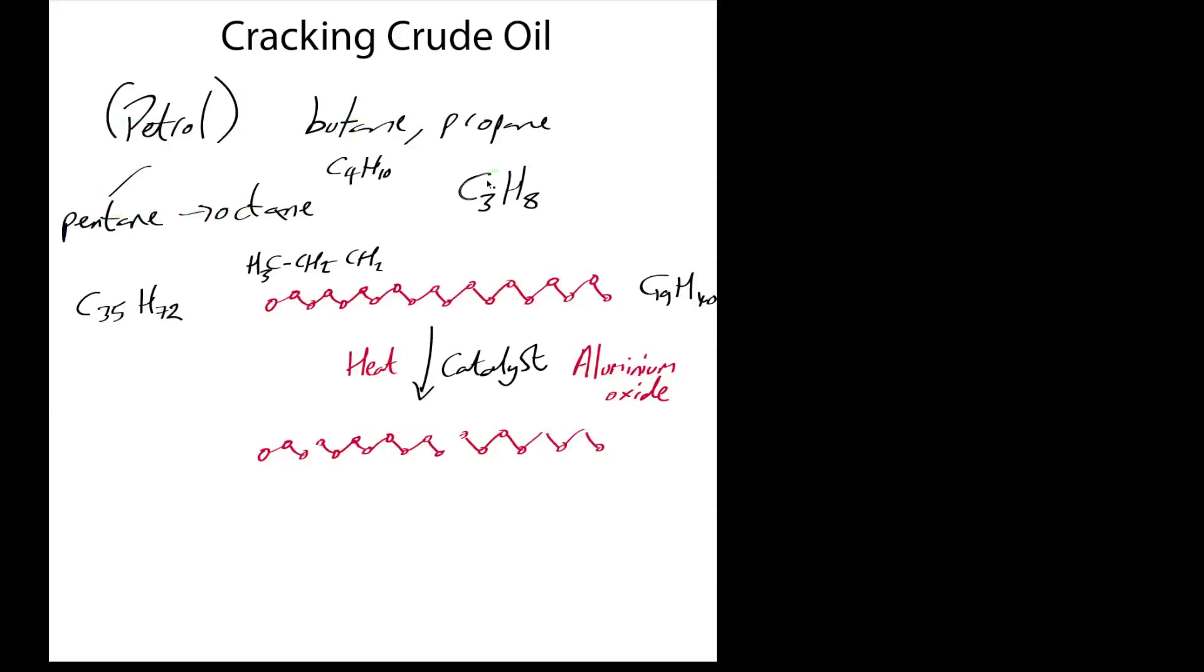One of the byproducts of this process is smaller molecules in the petrol range or butane range—these small fragments. But also ethylene is produced as well, and ethylene is quite a useful molecule. I'll draw that in blue.